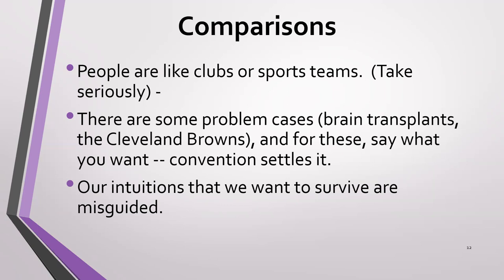You could compare what Parfit has to say about people to clubs or sports teams. We have some problematic cases with the Cleveland Browns football team, which originated in Cleveland, existed for several years as the Cleveland Browns, but then the franchise was moved along with most of its players and coaches to Baltimore, where they became known as the Ravens. Then later Cleveland re-instituted a team called the Cleveland Browns. What do you say about the existence of the Cleveland Browns in that case? It's a matter of convention or law — you just settle it that way. With people, it's very similar: convention will settle it.